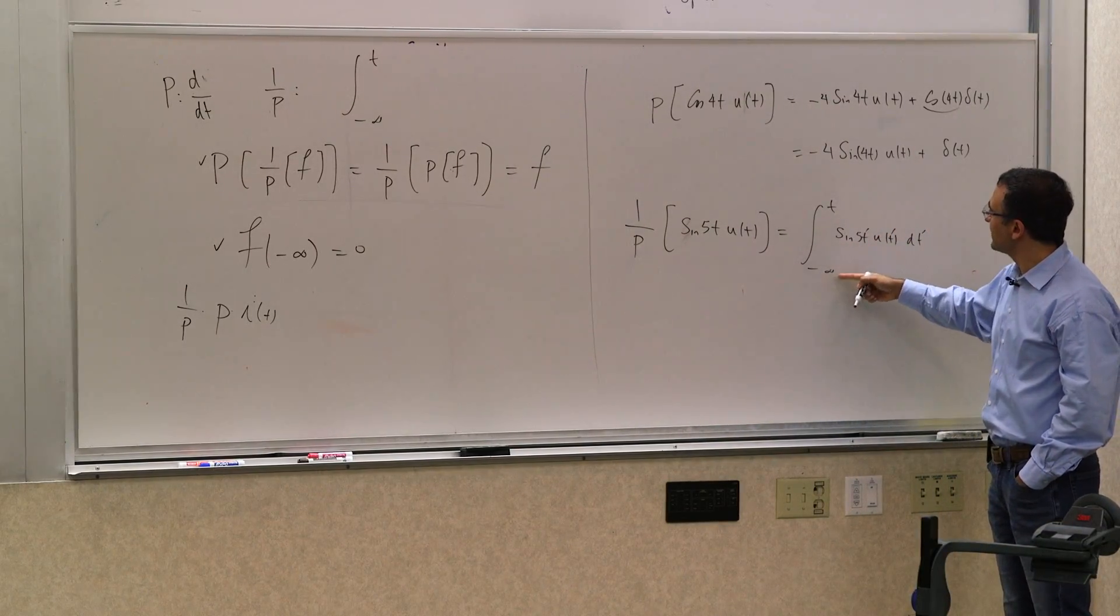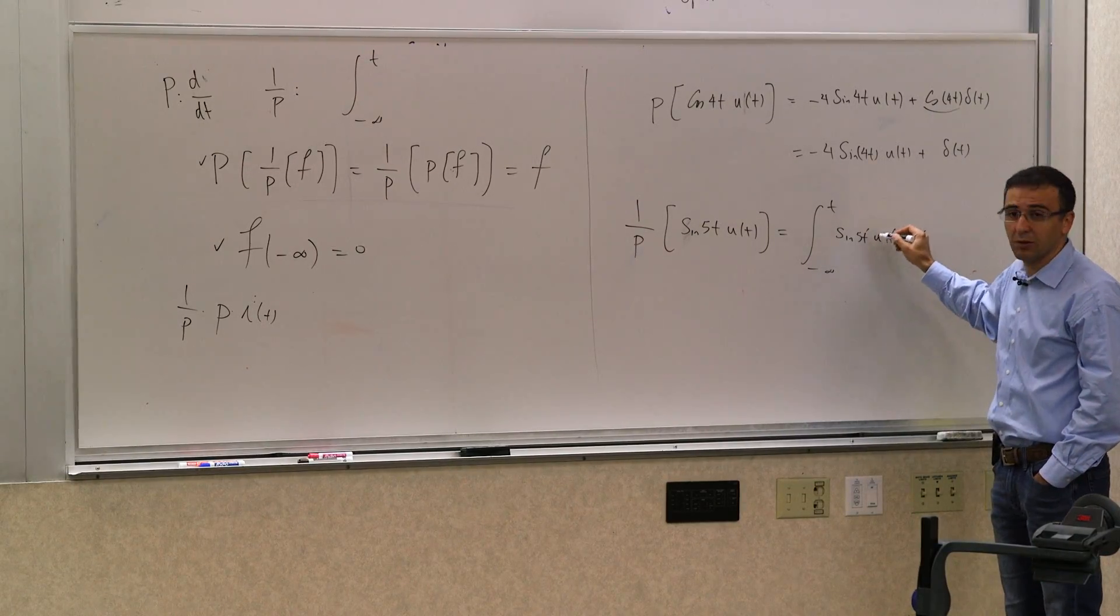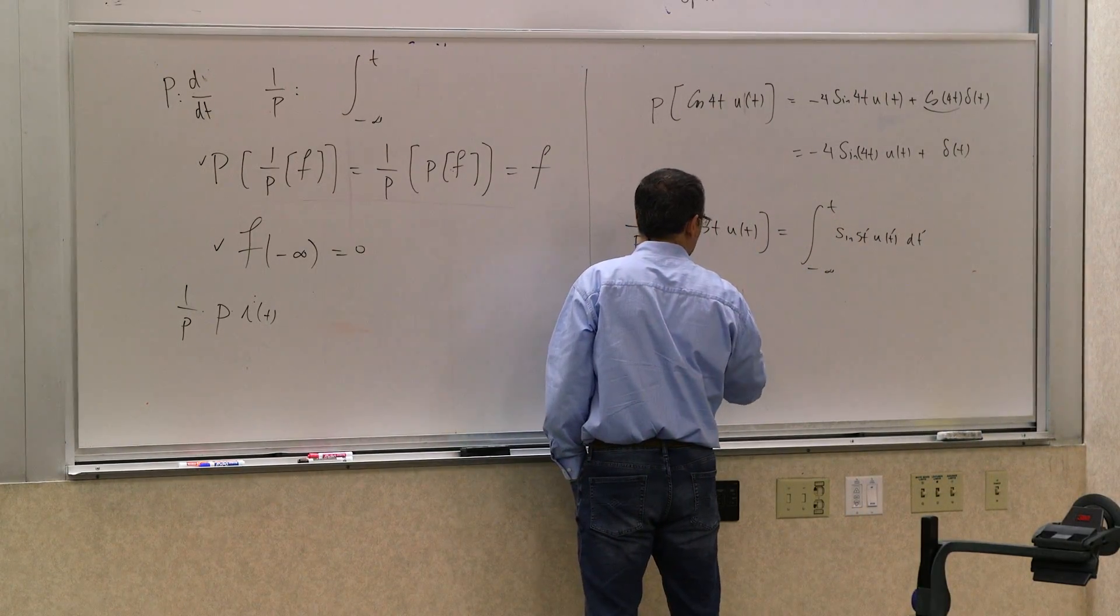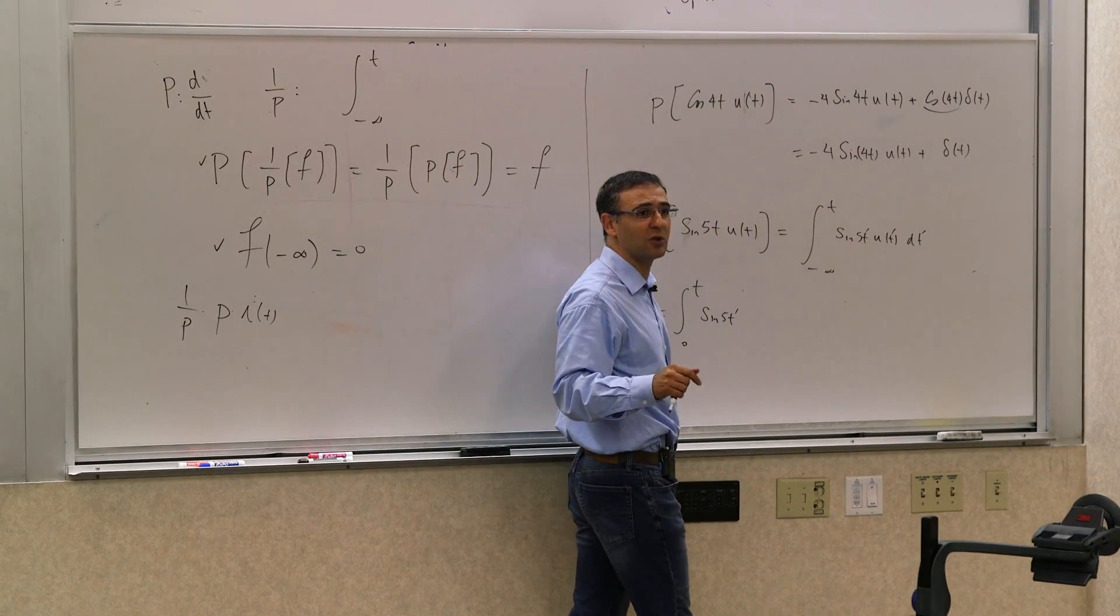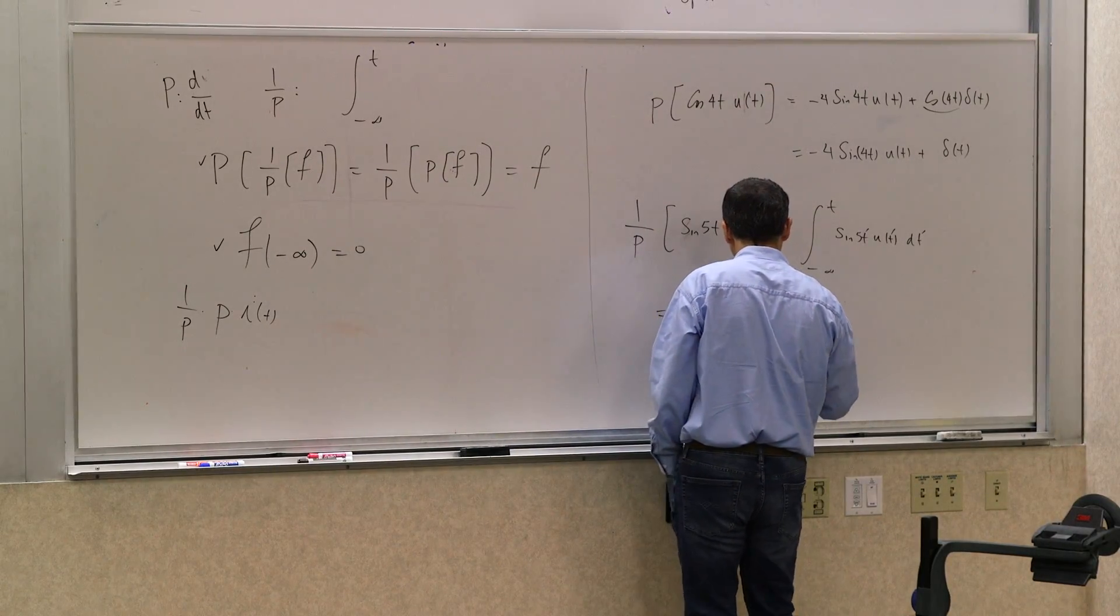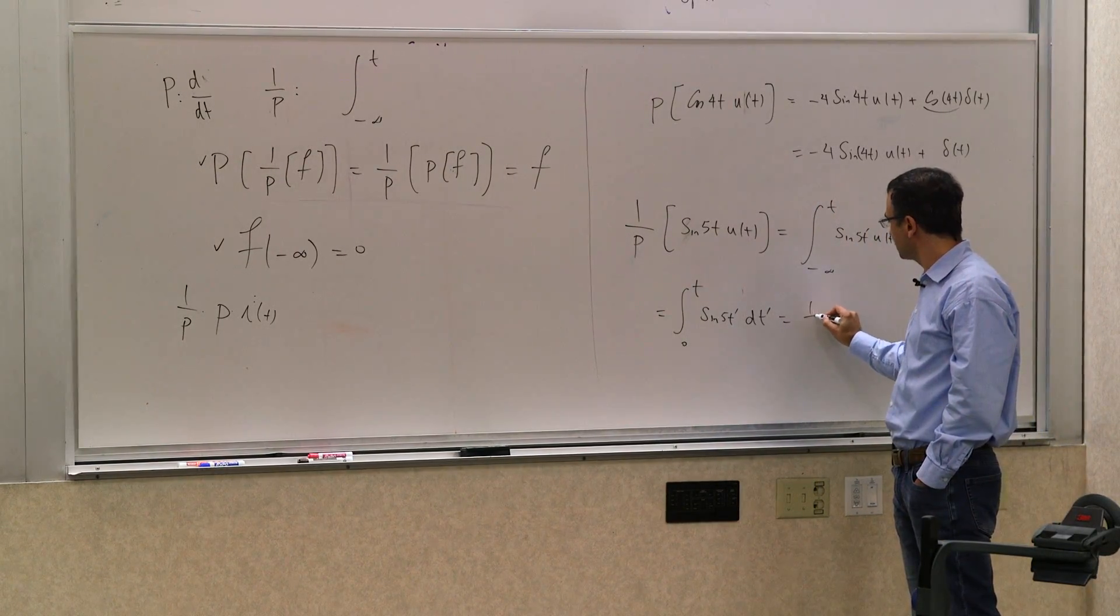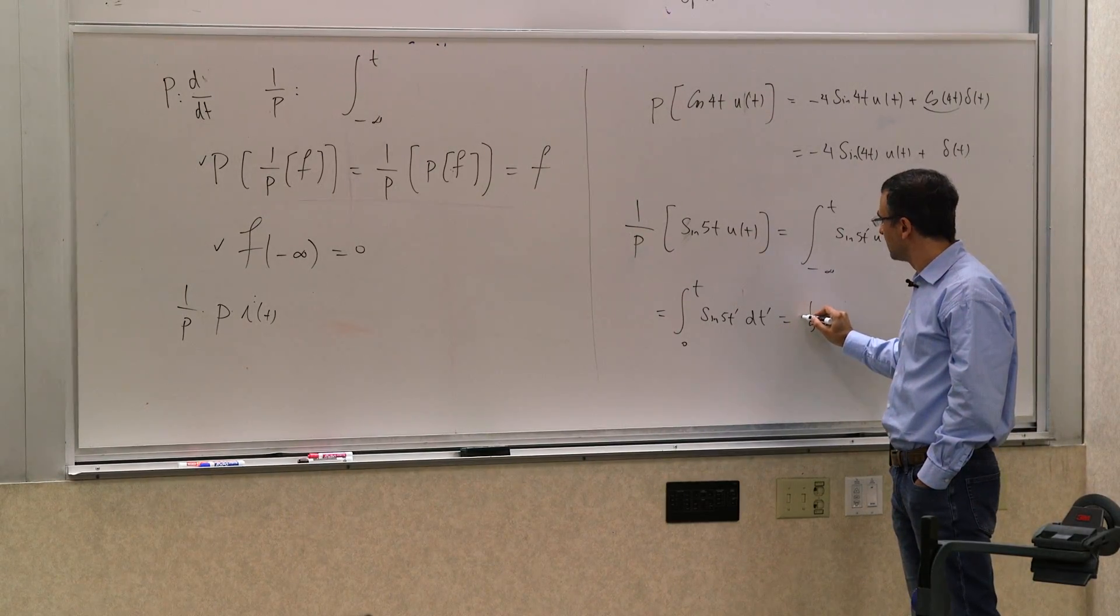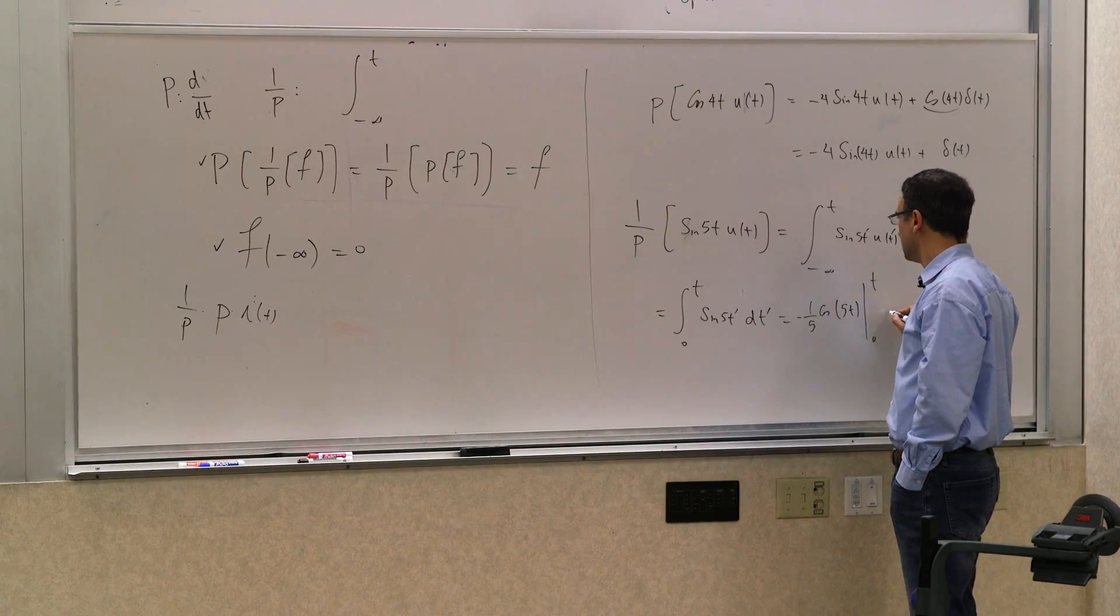But do I care about this from negative infinity to 0? Why? Because this is 0 for negative times. So what it really is equal to is the integral from 0 to t of sine of 5t prime. Now do I care about u(t)? No, it's going to be 1 for this range. So I can completely drop it dt prime, which is an easy integral to calculate. What is this integral?